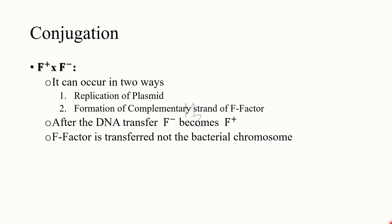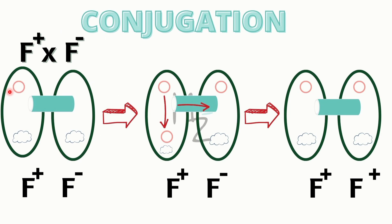In F-positive to F-negative conjugation, the F-factor — the plasmid — is transferred. The F-positive bacterium has the plasmid; after conjugation through the sex pilus, the plasmid either replicates or sends one strand into the recipient, which then synthesizes the complementary strand. Both bacteria now have the plasmid and are called F-positive. This is responsible for causing genetic diversity between bacterial cells.